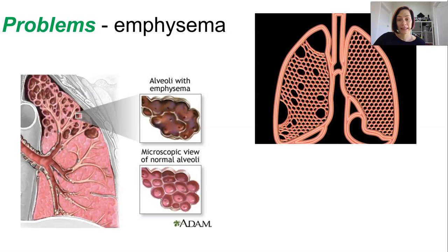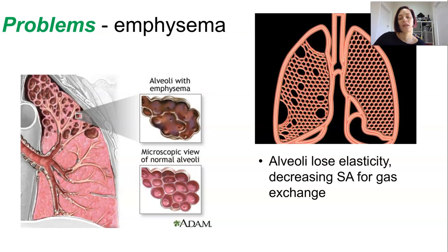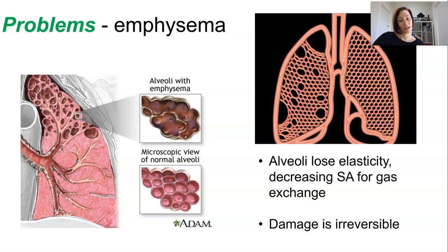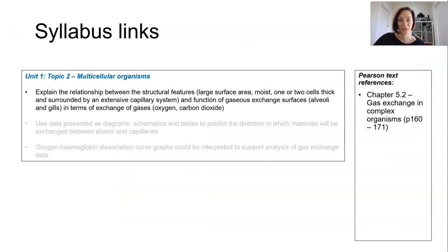Emphysema is most commonly caused by smoking and causes the alveoli to lose their bunch-of-grapes appearance, becoming more enlarged with really thick walls. This means fewer tiny sacs and larger chambers, resulting in lower surface area for gas exchange. Patients usually end up with shortness of breath, low oxygen, and high CO2 levels in their blood, meaning less energy. This damage is irreversible — it's chronic and will stay with you forever. Don't smoke.